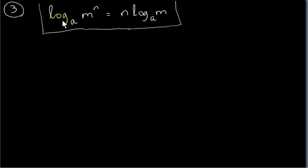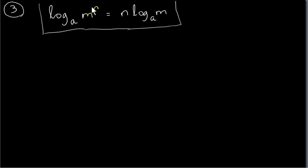The next property we want to look at is when we're getting the log of something that's raised to a power. So the argument of this log function is m to the power of n. It turns out that we can take the power and multiply it in front. So log of m to the power of n to base a equals n times log of m to base a.